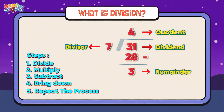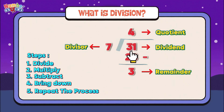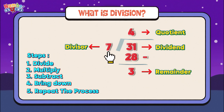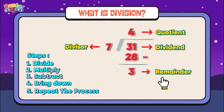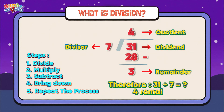Let's check out the example. Thirty-one divided by seven. Let's calculate how many sevens are in thirty-one — let's try four. Then multiply: four multiplied by seven is equals twenty-eight. And then subtract: thirty-one minus twenty-eight is equals three. Three is the remainder. Therefore, thirty-one divided by seven is equals four with the remainder of three.